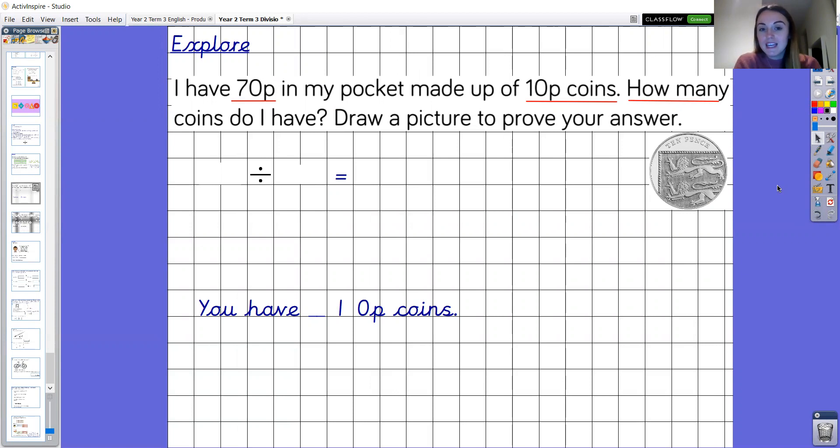What I'd like you to do is pause the video here, write the division first of all and then draw a picture to prove your answer. So what I'd like you to do is draw circles to represent the 10p coins like you can see in the picture here and write 10p inside each coin to solve this question. Say aloud the stem sentence you have blank 10p coins at the end and then we're going to come back together.